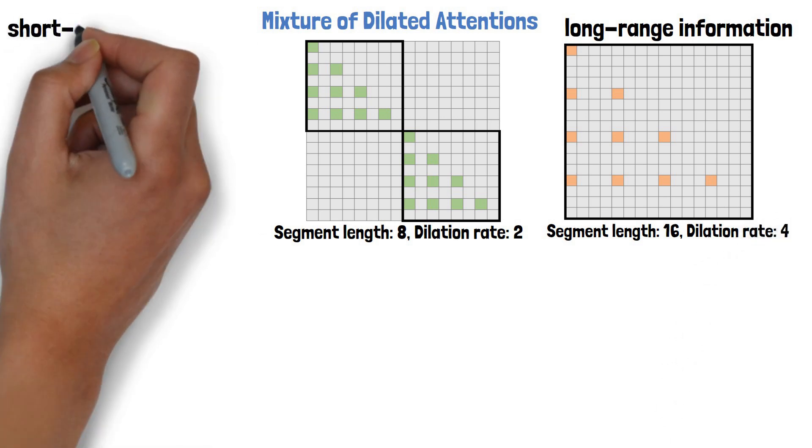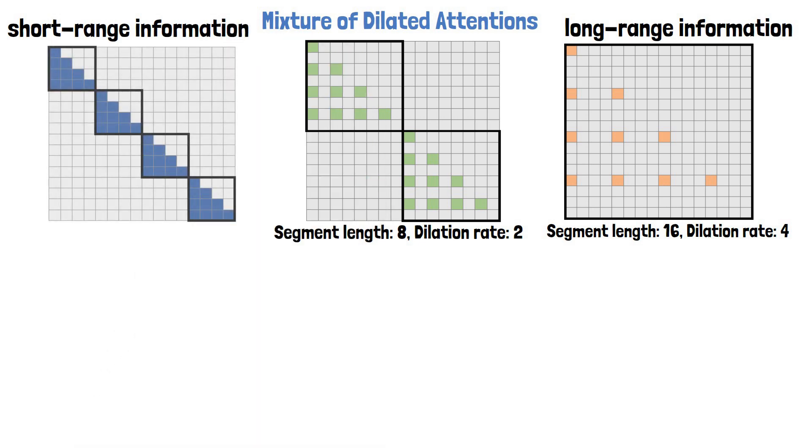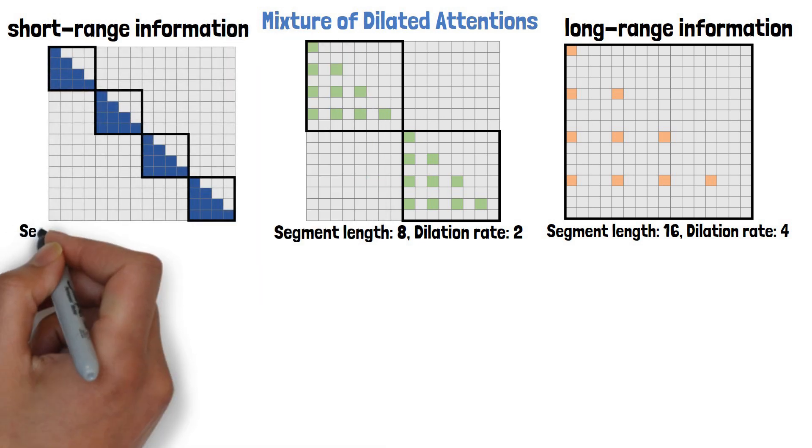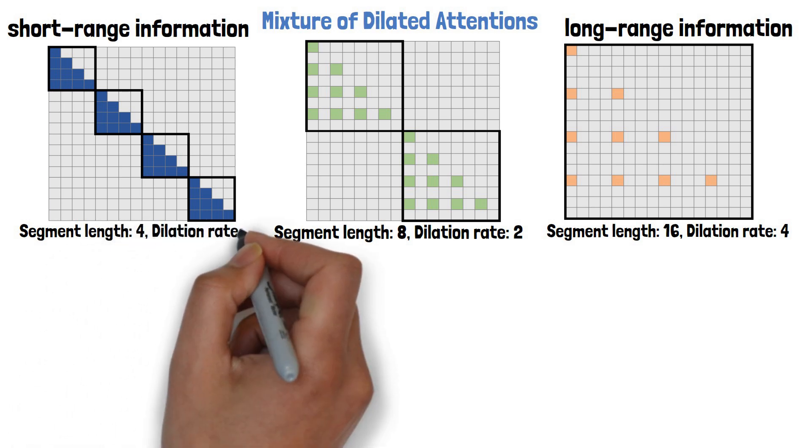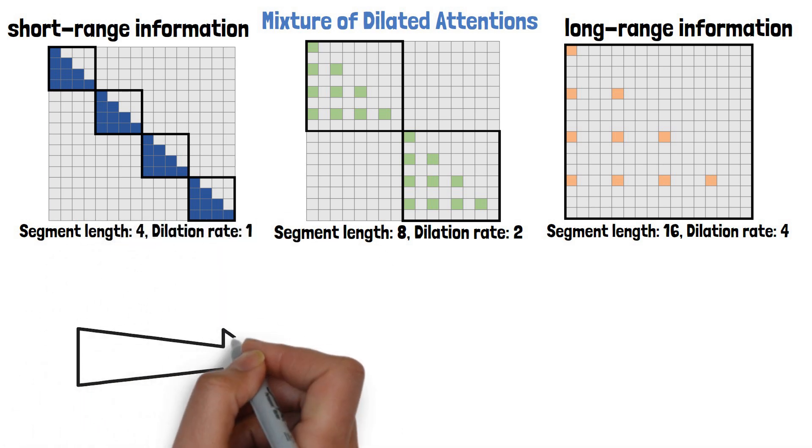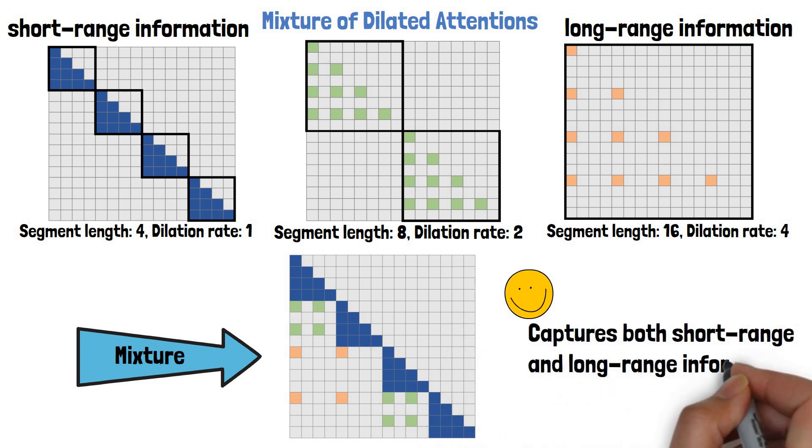And to capture short-range information, they include another dilated attention block with smaller segments and lower dilation rate, like in this example where the segment is of size 4 and dilation rate is 1. Then, all of the different dilated attention can be computed in parallel and results from all attention blocks are used to provide the model with diverse and full information that captures both short-range and long-range information.